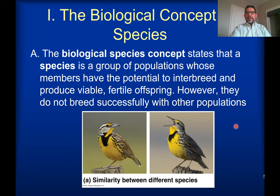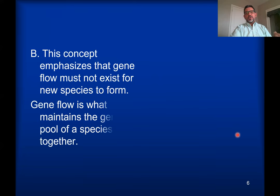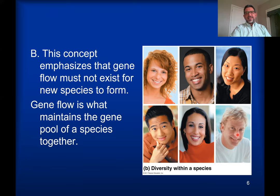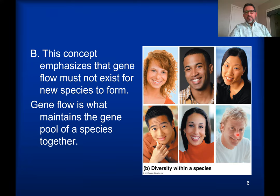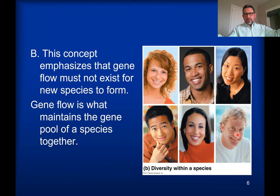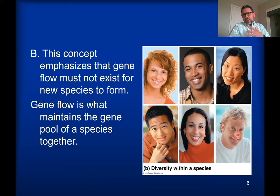We need to think about what has to happen to stop gene flow between two populations, allowing those two populations to change over time to the point they are no longer able to interbreed. For example, all humans are members of the same species — Homo sapiens sapiens — regardless of what part of the earth you find a person. If you find a male and a female from completely opposite parts of the earth, those two people are going to be able to produce fertile, viable offspring. So we are members of the same species even though we come from completely different geographical places.